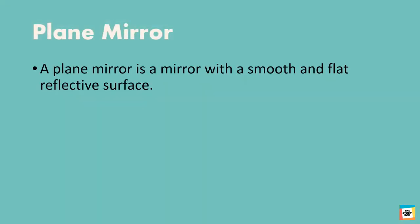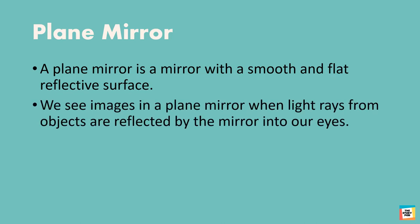A plane mirror is a mirror with a smooth and flat surface. We see images in a plane mirror when light rays from objects are reflected by the mirror into our eyes. Let's understand this with a diagram.